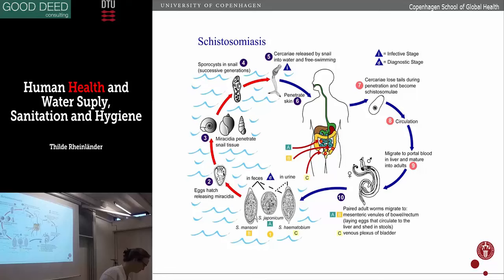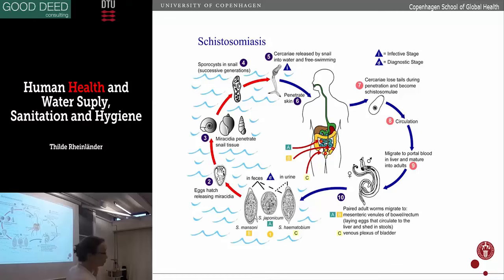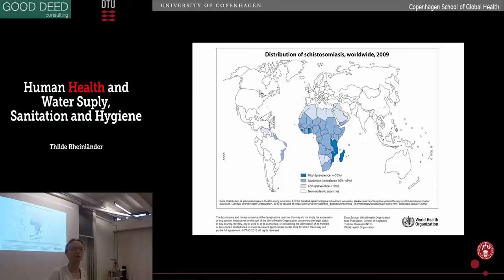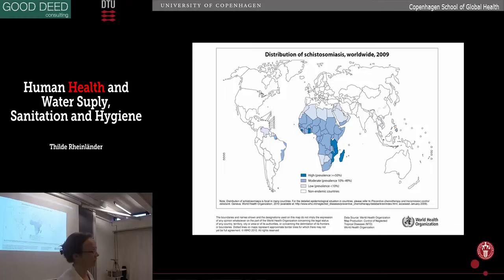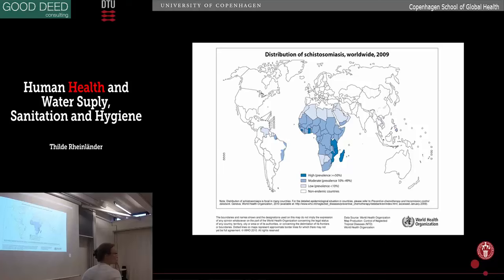That was schistosomiasis. You can understand now the point of the transmission circle and putting in control measures at different points. If you look at where it is in the world, it's almost only in Africa, in places around big lakes and with a lot of natural water bodies. There are very large programs now to prevent schistosomiasis — in the last decade millions of people have been treated. The most common approach now is mass drug administration, where you give medication to people without individual diagnosis first, treating whole villages, especially those in high-risk areas living on the shores of lakes.